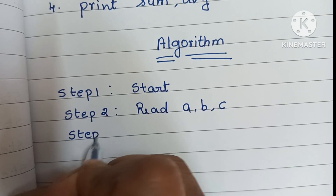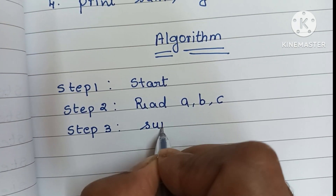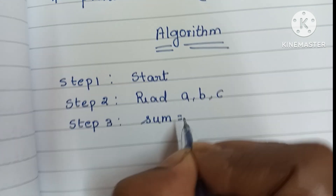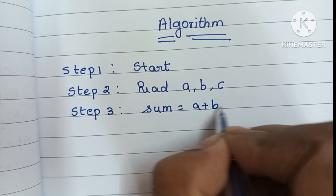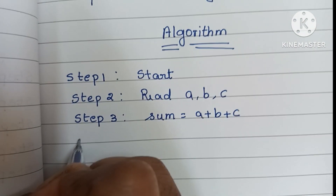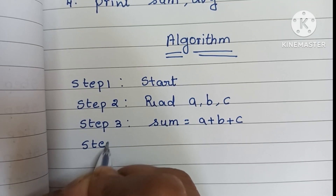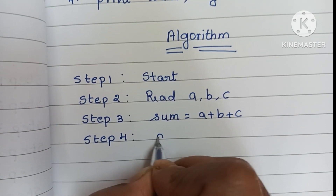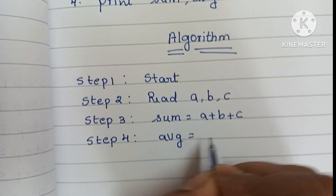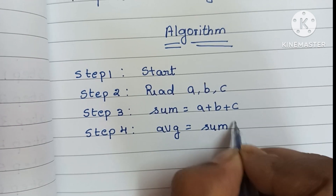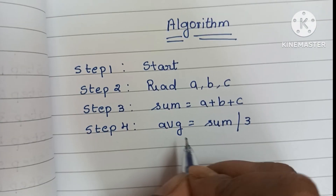In step three, we calculate the sum value: sum equals a plus b plus c. In step four, we have to find the average: average equals sum divided by 3.